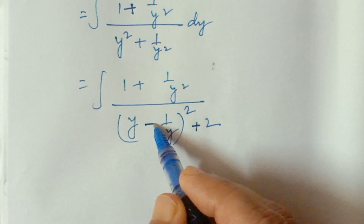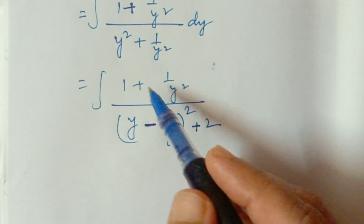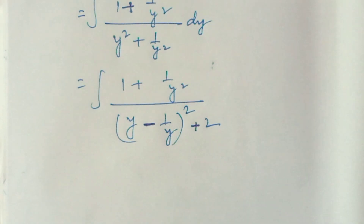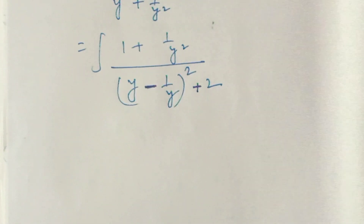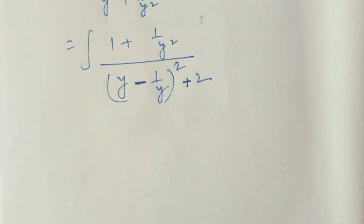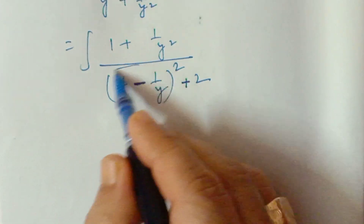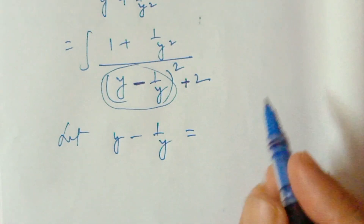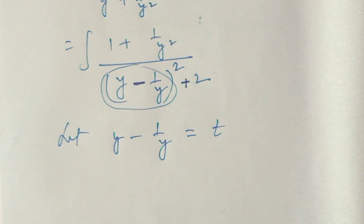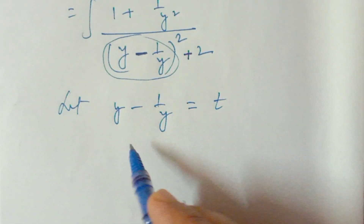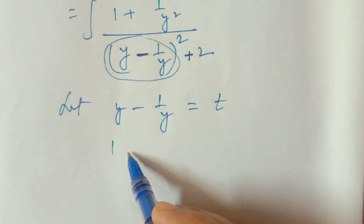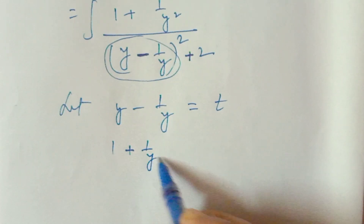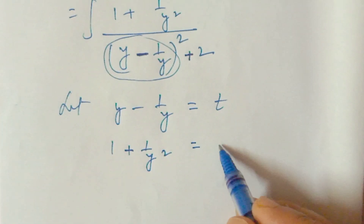We added minus 2 and plus 2 to complete the square pattern. Now let t equal y minus 1 by y. Differentiating, dt equals 1 plus 1 over y squared dy, which matches the numerator. So the numerator 1 plus 1 over y squared dy becomes dt.